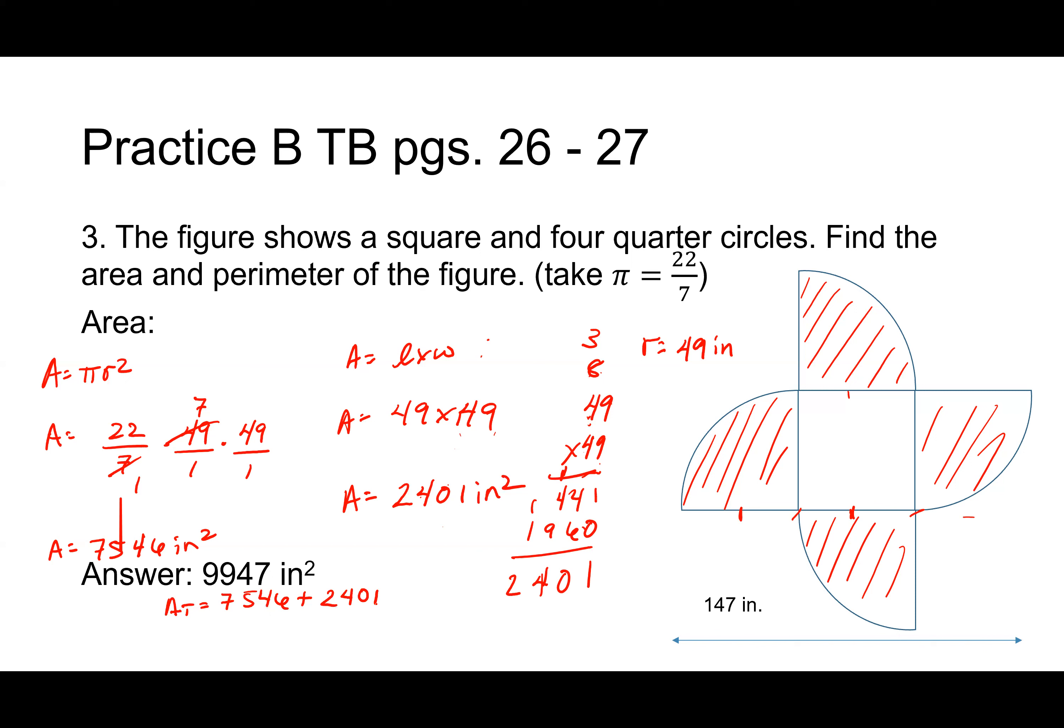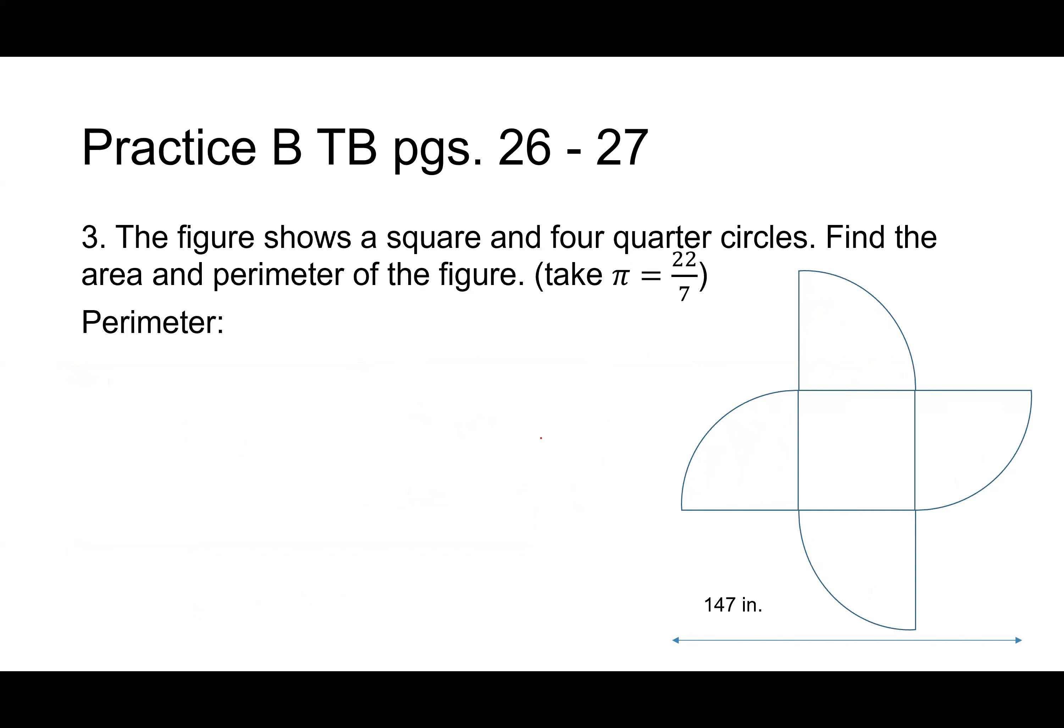You guys feel like your brain's getting a workout? I see a lot of you just kind of waiting on the work to flash up there. All right, perimeter. How am I going to find perimeter? What portion of a circle will I need to find here? Yeah, we're going to find a whole circle. So if my radius is 49, what's my diameter that I want to use for this? 49 times 2. Yep, 98. Good job.